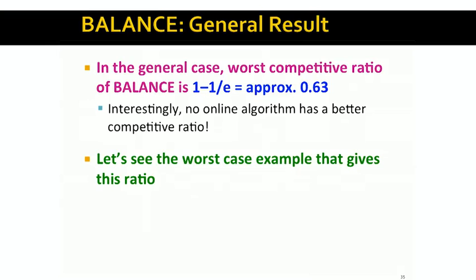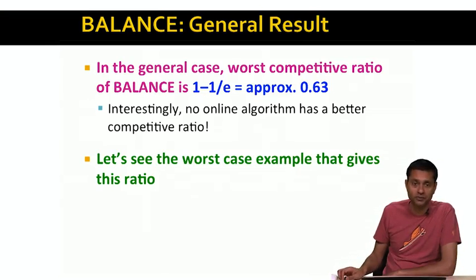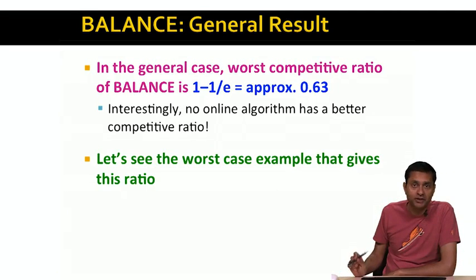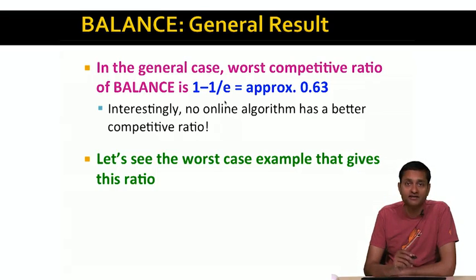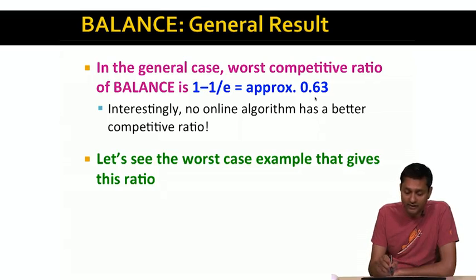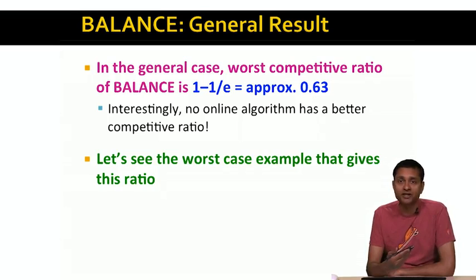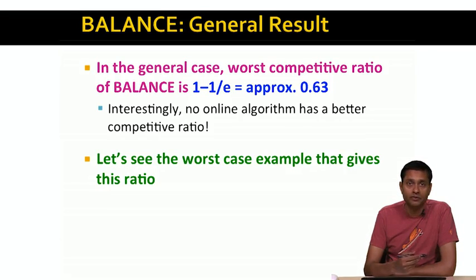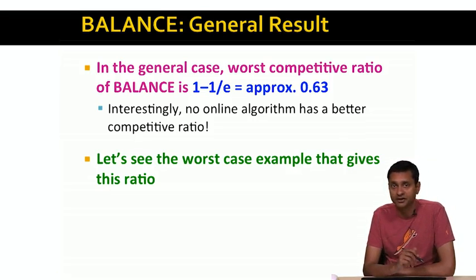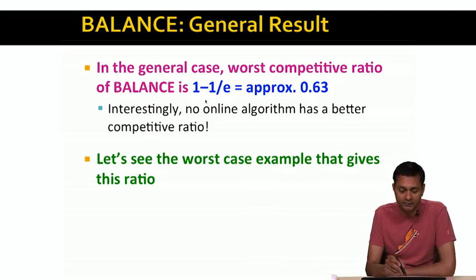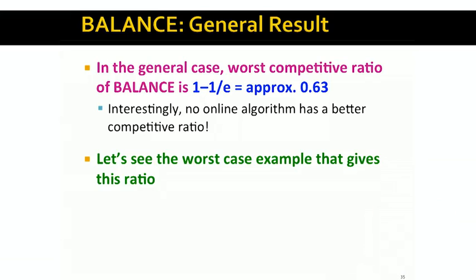We've analyzed balance with exactly two advertisers and shown the competitive ratio is three-fourths. But what happens with more than two advertisers? For a large number of advertisers, it can be shown that the competitive ratio of balance is given by 1 − 1/e, where e is the base of the natural logarithm (approximately 2.718), giving a ratio of approximately 0.63. This is strictly better than one-half, the competitive ratio of the greedy algorithm. Interestingly, no online algorithm can actually do better than 1 − 1/e for the AdWords problem. I'll show you the worst-case example that achieves this competitive ratio of 1 − 1/e.